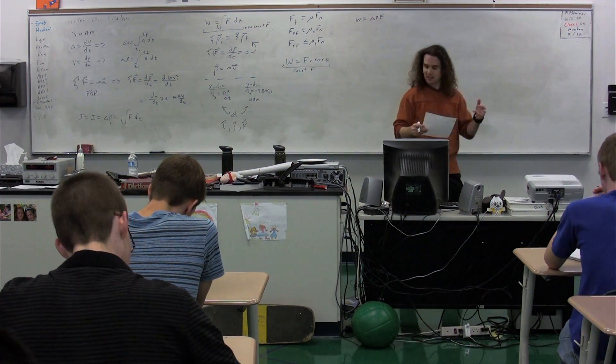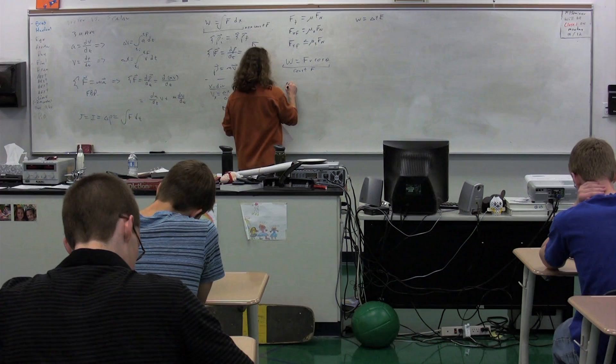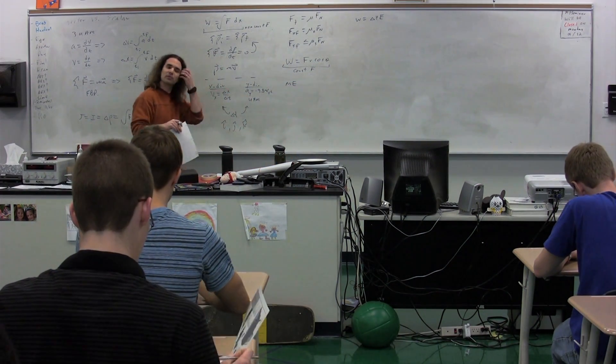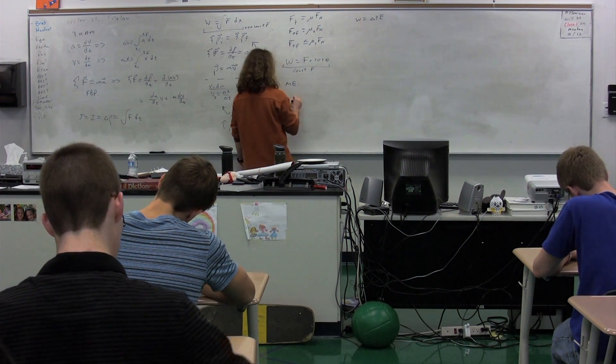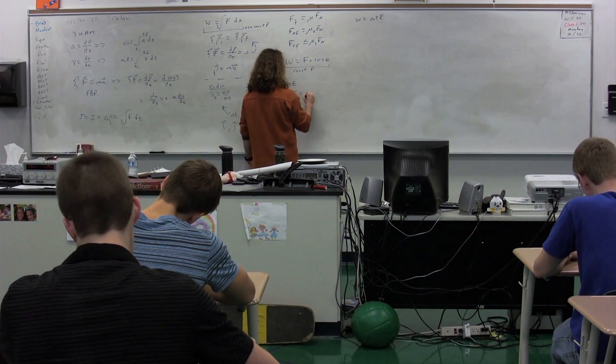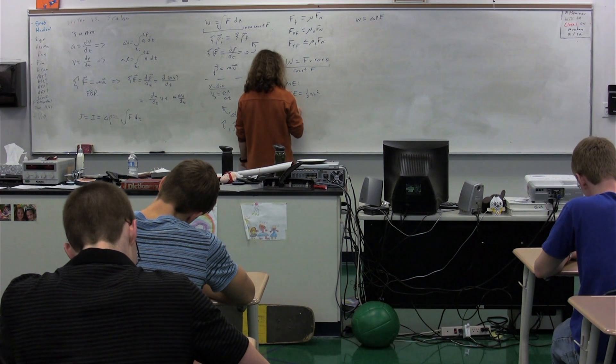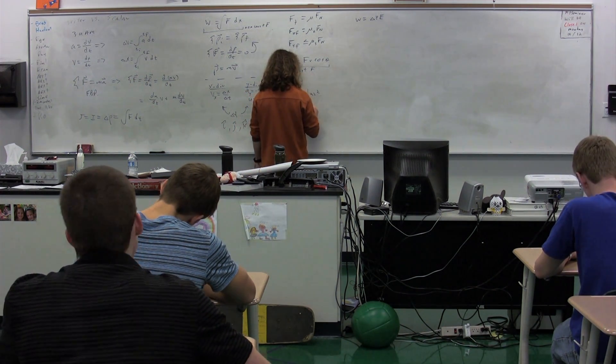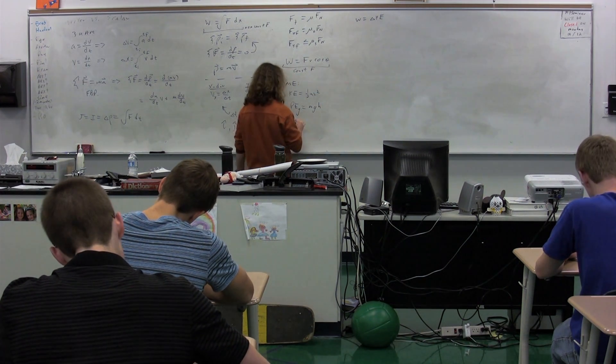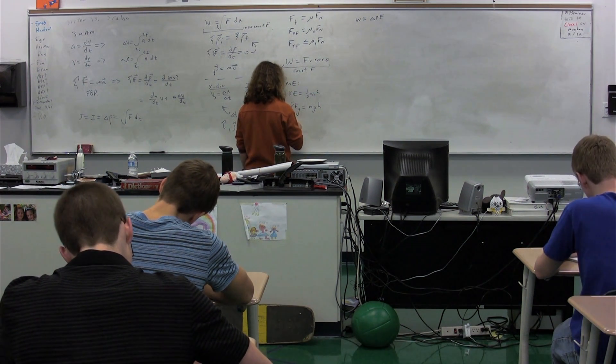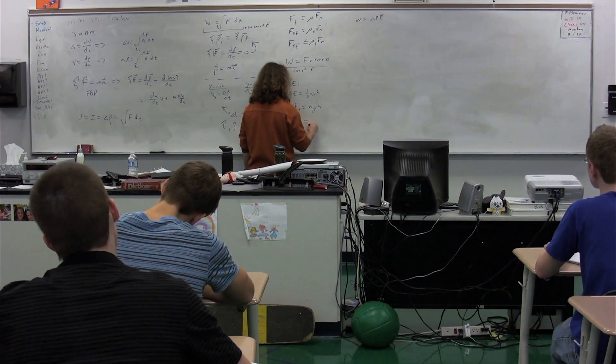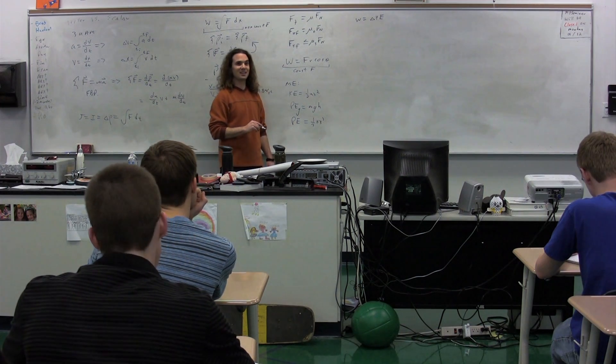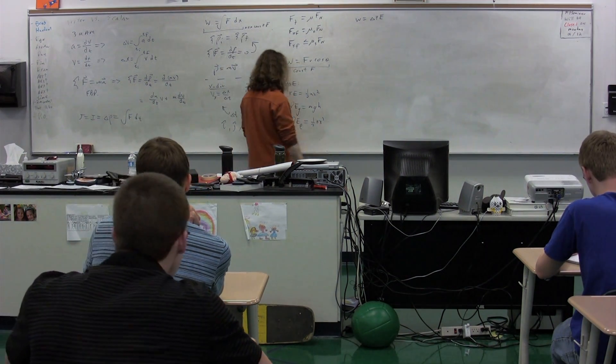Okay. Work equals change in kinetic energy. Let's do the three different types of mechanical energy first before we get to that. Three different types of mechanical energy. Please name me all three and their equations. Catherine? Kinetic energy equals one-half m times v squared. Potential and gravitational energy equals mgh. And spring potential energy equals one-half kx squared.